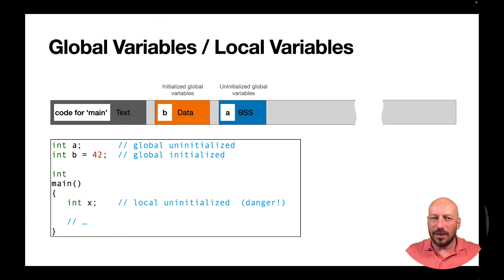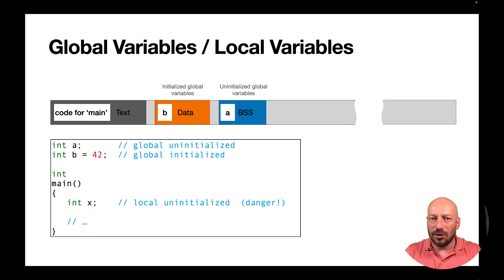This understanding allows you to understand why C can be so specific about the initial value of a global variable. If you initialize it explicitly, it is part of the data segment. If you do not initialize it, it's part of the BSS segment. So before execution begins, it has a well-defined initial value, and the C standard is very specific about this.